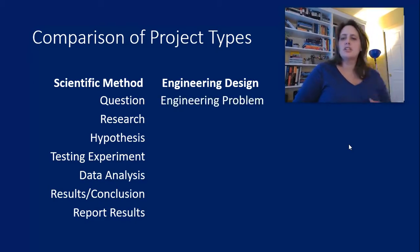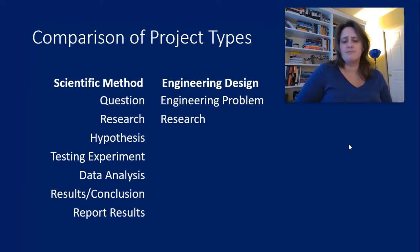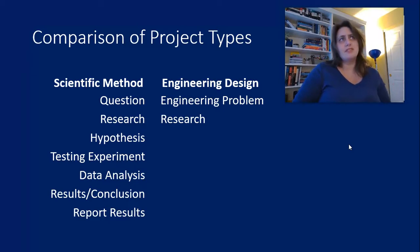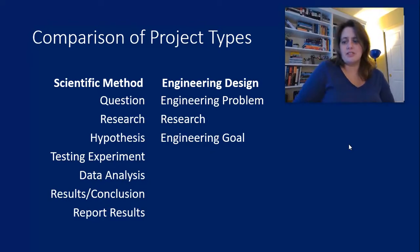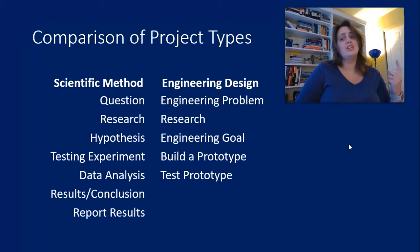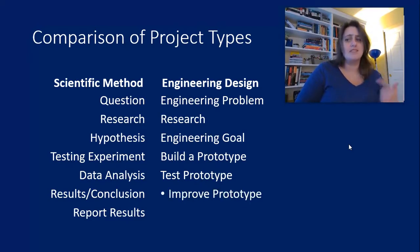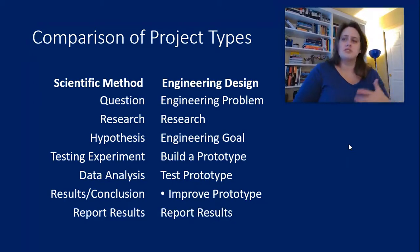For engineering design, instead of a question you come up with an engineering problem — a statement about something that needs improvement or needs to be designed from scratch. You do research, just like with the scientific method, looking for ways other people have solved that problem, ways you could solve it, solutions that exist that maybe need modification. You come up with engineering goals instead of a hypothesis — instead of saying 'I think this will happen,' you say 'in order to solve this problem, these are the criteria my solution needs to meet.' Instead of doing an experiment, you build a prototype. Instead of data analysis, you test your prototype. You improve your prototype based on testing, then report your results once you've reached a solution that meets all your criteria.